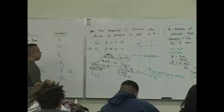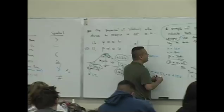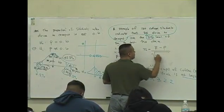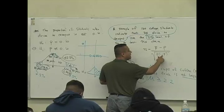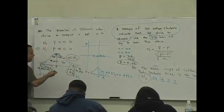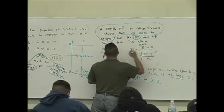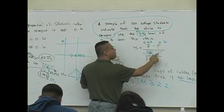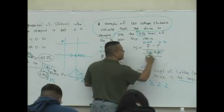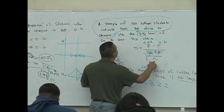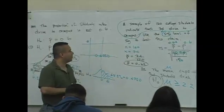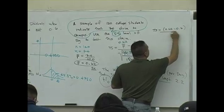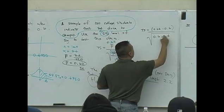That's a 62% sample proportion — pretty close to 60%. So let's see what the test statistic says. The test statistic is the difference between the sample proportion and the true proportion, divided by the square root of the true proportion times its complement divided by n. Plugging in: 0.62 minus 0.6, divided by the square root of 0.6 times 0.4 divided by 120.